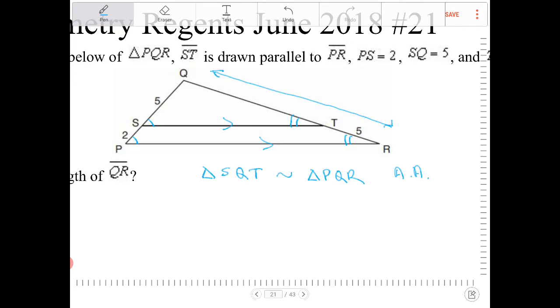We can set up a proportion to find it. So let's call that length there X. Right? So if that's the case, then QT in terms of X will be X minus 5. So now I have the side lengths that I can do comparisons with, I can set up proportions with.